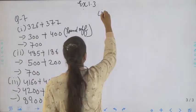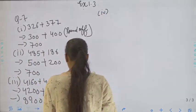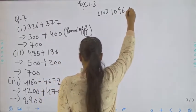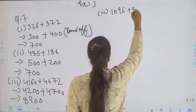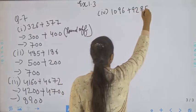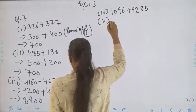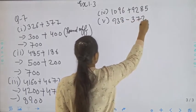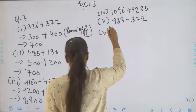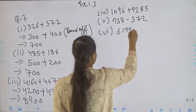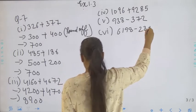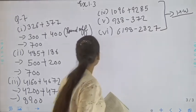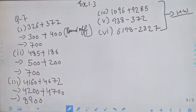Now move to the fourth part: 1096 plus 9285. The next part is the sixth part. Students, these are your homework — you have to do them yourself. If you want to take a screenshot, you can take it.